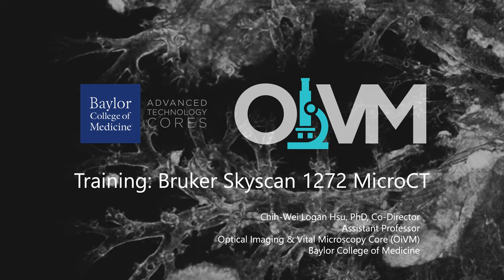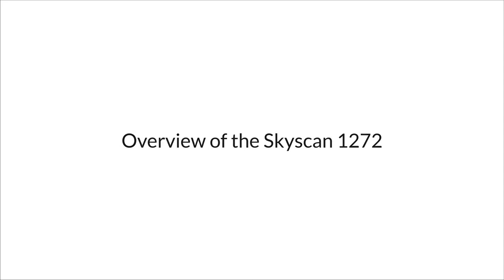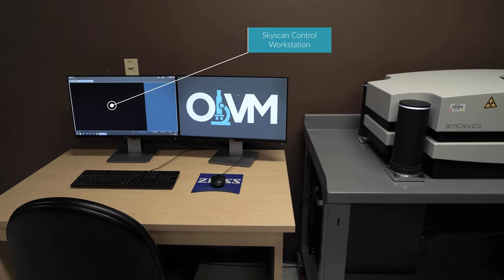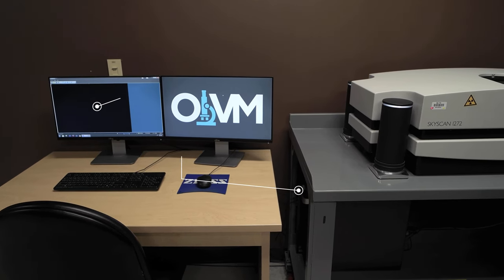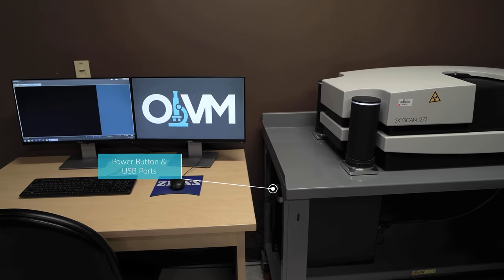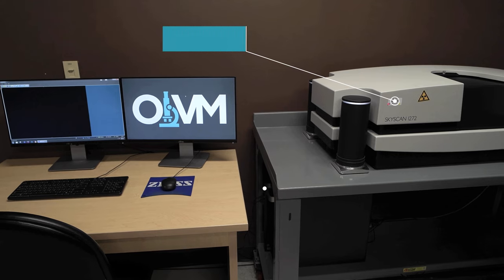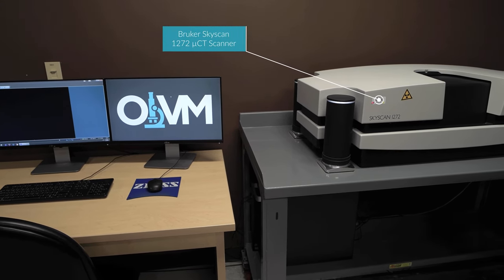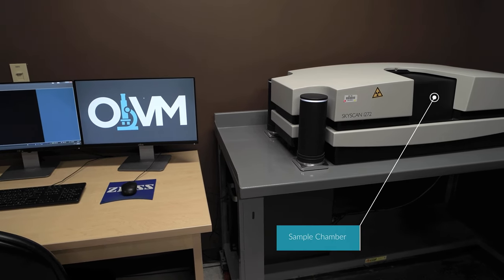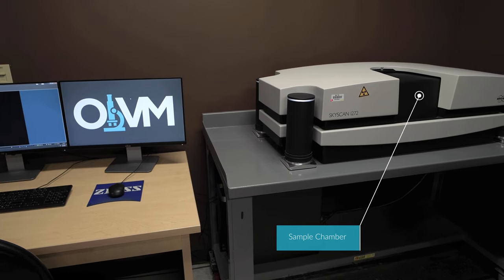Let's first begin with an overview of the major components of the Skyscan 1272. When you come to the Skyscan 1272 workstation within the OIVM core, you will find the host computer on the right hand side of the monitors. Over the top is the compact desktop Skyscan 1272 MicroCT system with the sample loading chamber located at the center. You will also see four LED x-ray status indicators located on each of the four vibration isolation stands.